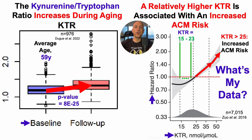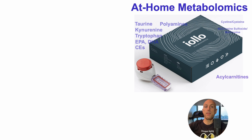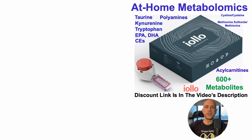With that in mind, here's my personal data — I've now measured kynurenine and tryptophan four times by sending blood for at-home metabolomics using Iolo's kit. If you're familiar with the channel, you've seen me make many videos using this kit. This kit provides information not just on these metabolites but also 600 plus others. If you're interested in measuring them, there'll be a discount link in the video description.